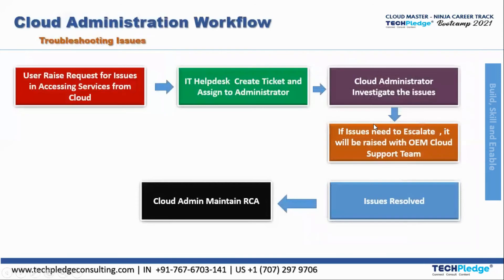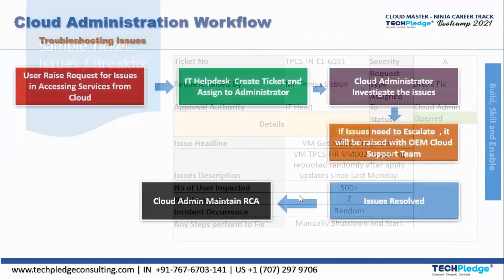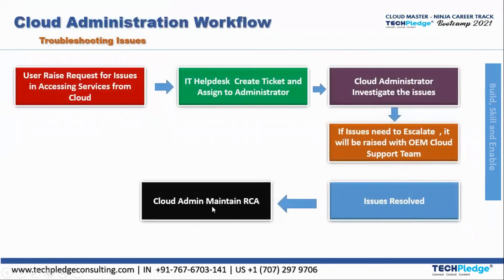With the support team, the issue will be raised further and the support team will resolve it. Once the issues are resolved, it goes to the cloud admin to maintain the Root Cause Analysis (RCA). This is how troubleshooting issues are handled — from raising a request, creating a helpdesk ticket, investigating, escalating, resolving, and finally maintaining the RCA.